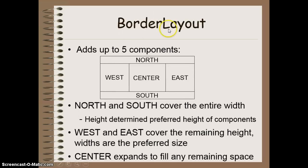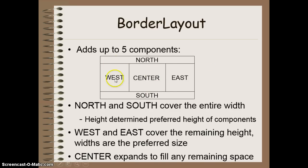The next Layout Manager is Border Layout, which divides the panel into five separate areas, each holding one individual component for a total of five components. The north and south areas cover the entire width of the panel, and their height depends on the preferred height of the component placed there. The west and east areas cover the remaining height not taken by north and south, and expand inward based on the preferred width of their components. The center area expands to fill any remaining space.